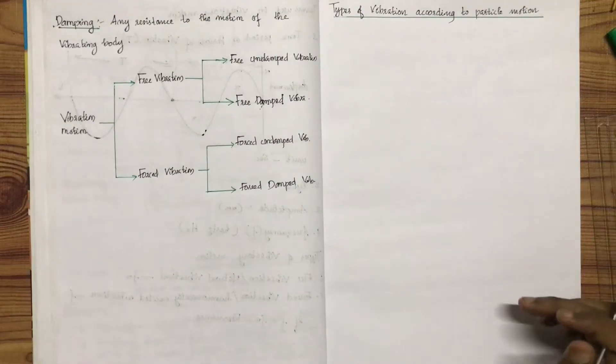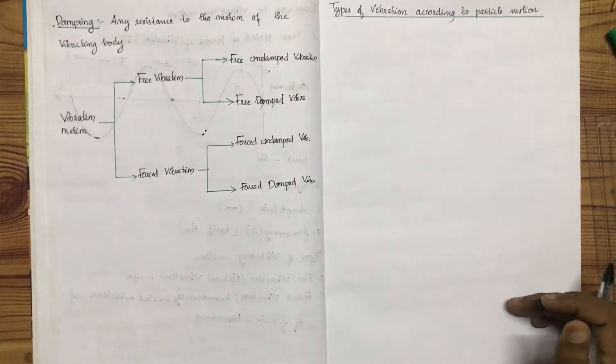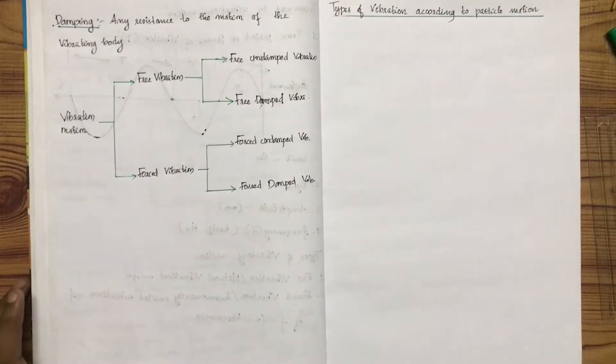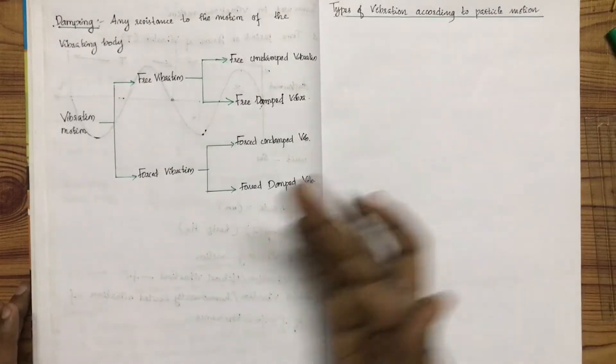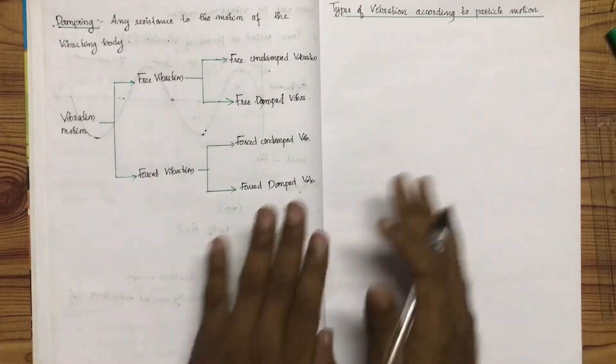This topic is called the types of vibrations according to particle motion. We will generalize free, damped, and undamped vibrations.